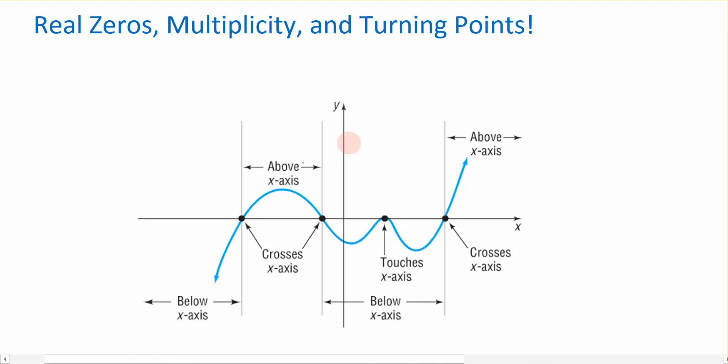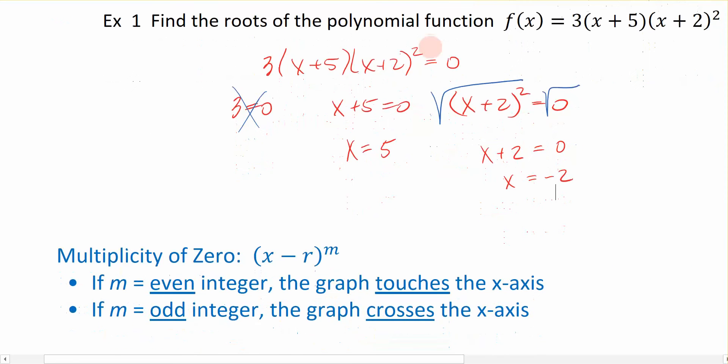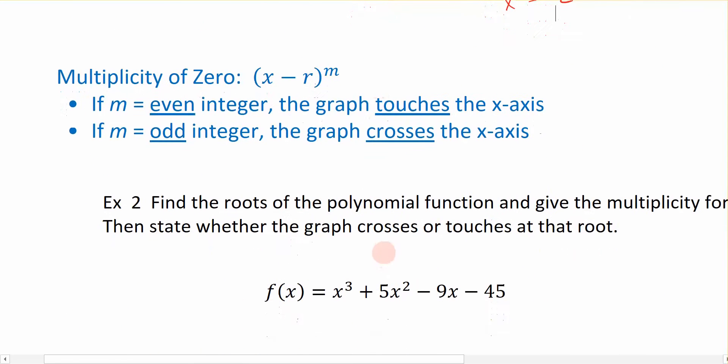So here we're starting out with this picture again. It's not the same video, it's a different one, but I want to tell you that we have places where we are going to both cross and touch the x-axis, but we don't know which one it is when I solve the equation, when I solve the function for its zeros. I can either be crossing or I can be touching. So that's when we start to understand multiplicity.